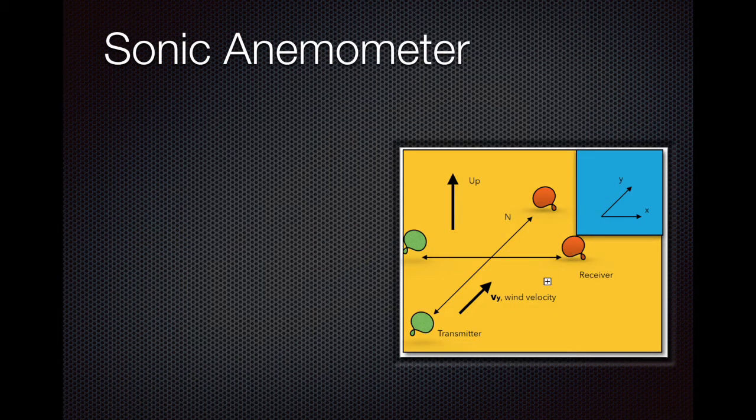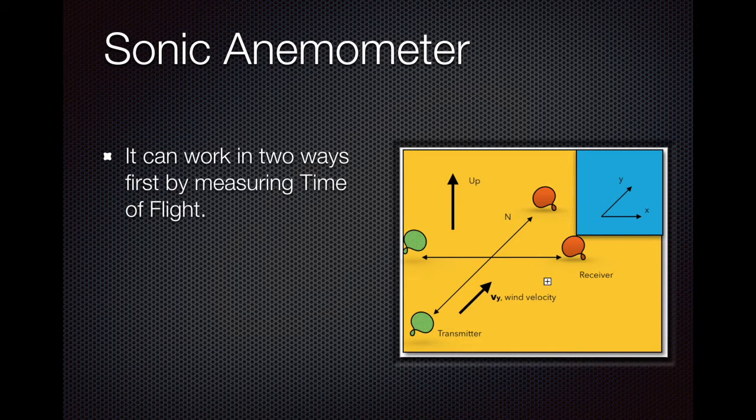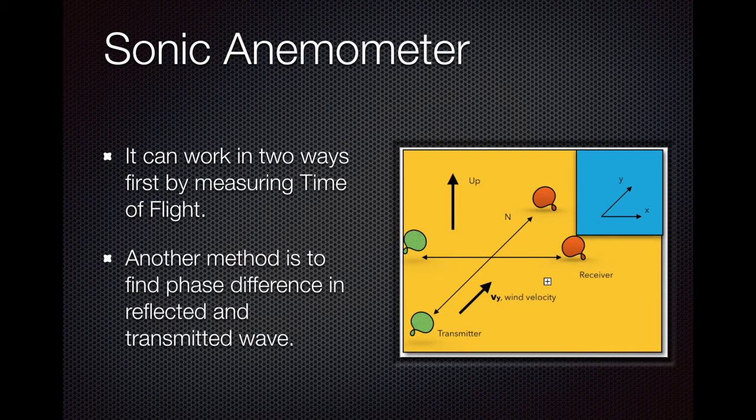They can be used to measure the time of flight by sending a wave from a transmitter to a transducer that connects as transmitter and receiver. In this example, first we send a wave from transmitter to receiver and the effective velocity is C plus Vy. When it comes back from the receiver, the effective velocity is C minus Vy.